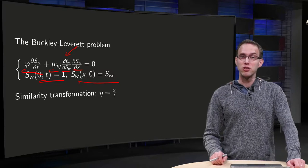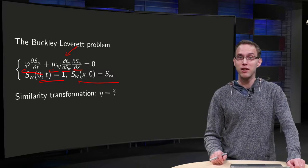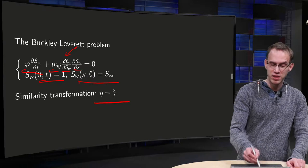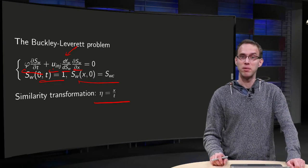Now, we can try to solve this problem analytically in the following way. We can use a similarity transformation, η equals x divided by t, and try to express all our variables in terms of η.